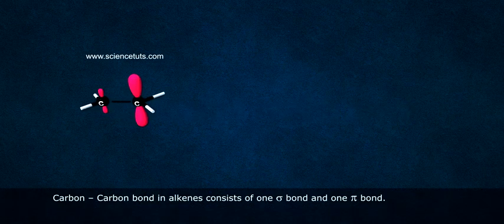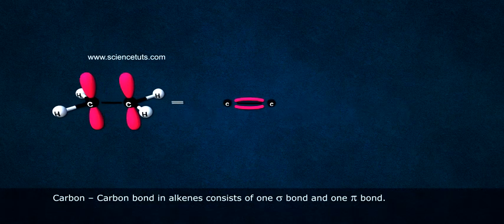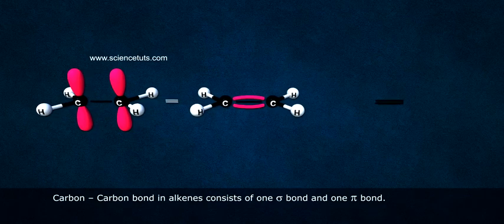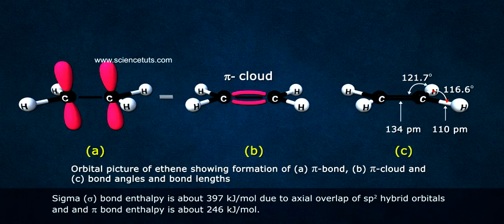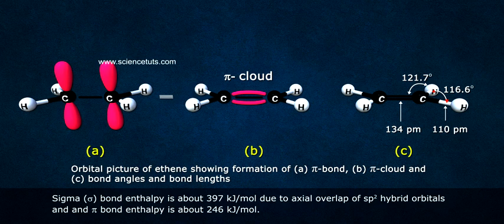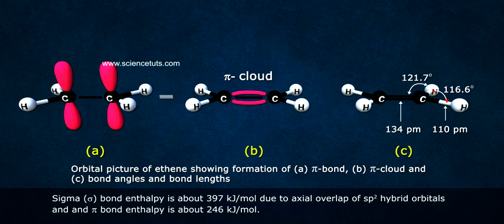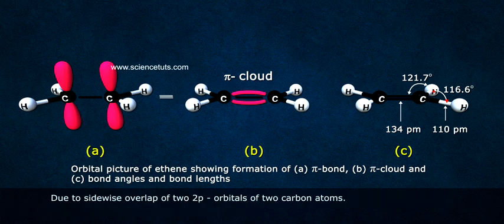Carbon-carbon bond in alkenes consists of one sigma bond and one pi bond. Sigma bond enthalpy is about 397 kJ per mole due to axial overlap of sp2 hybrid orbitals. Pi bond enthalpy is about 246 kJ per mole due to sidewise overlap of two 2p orbitals of two carbon atoms.